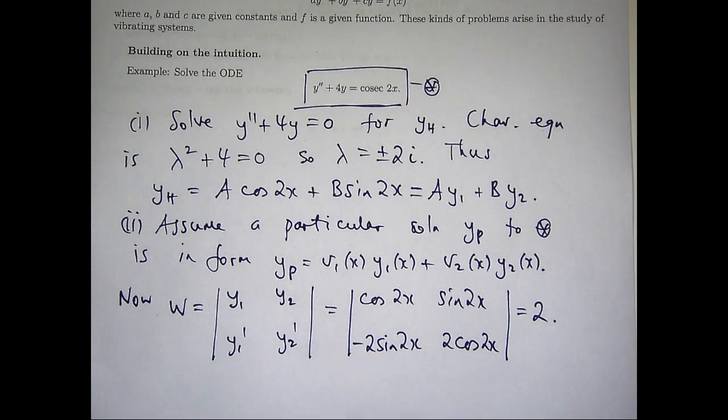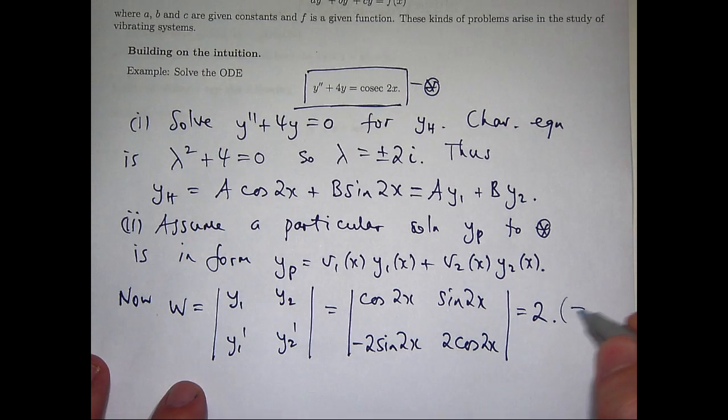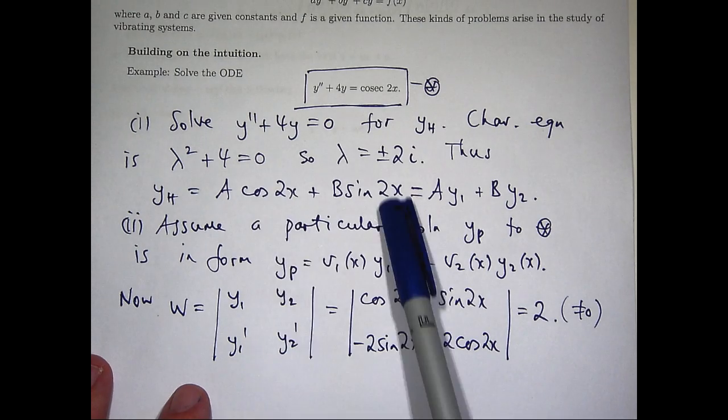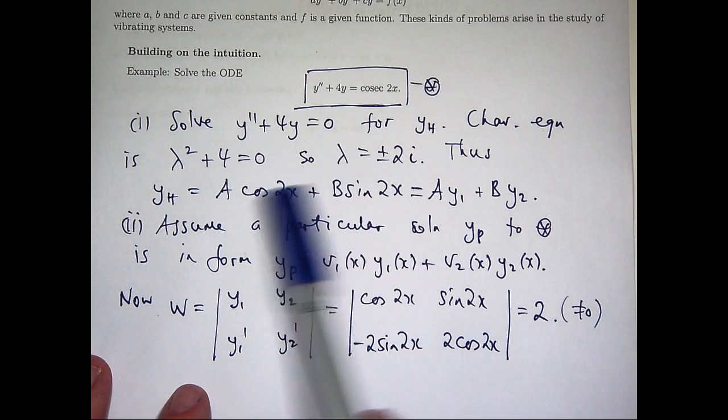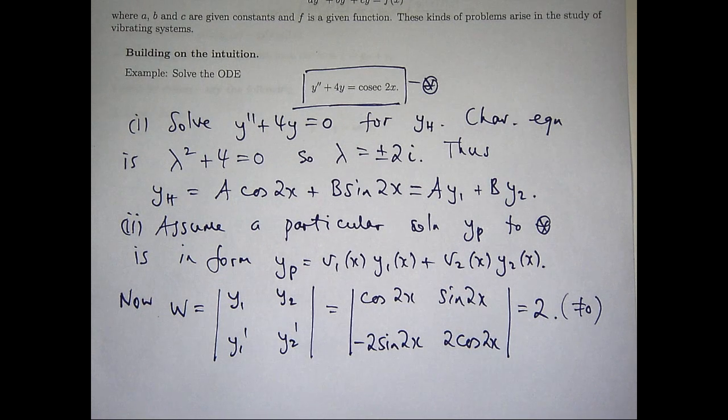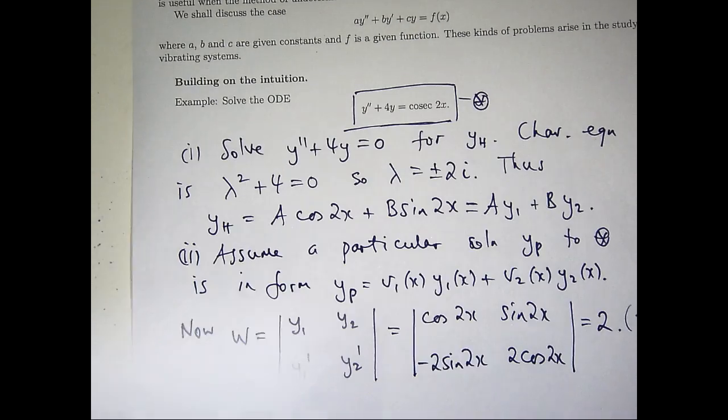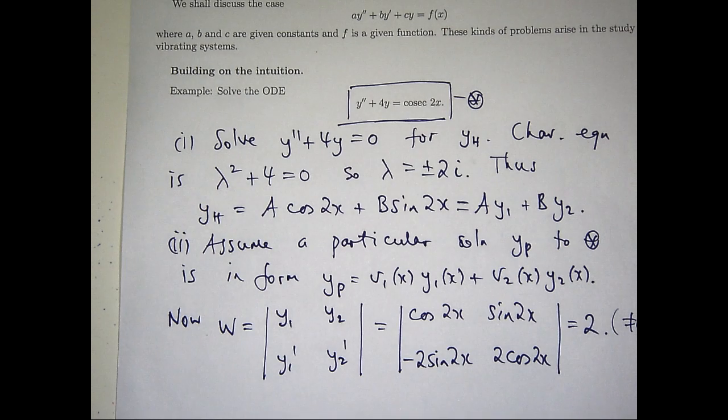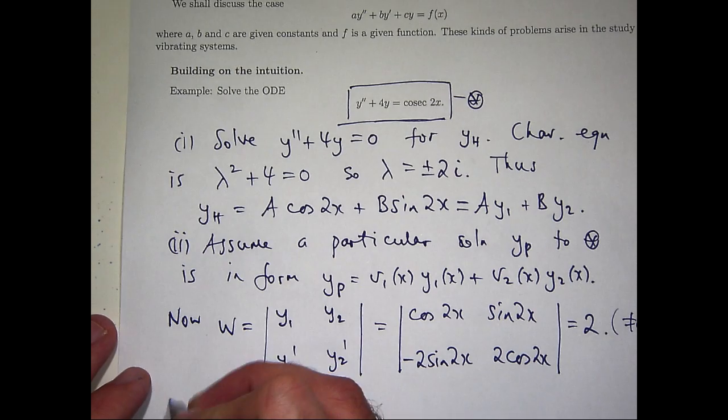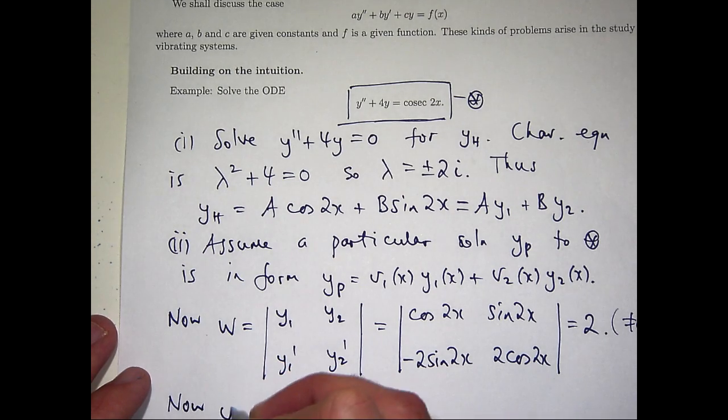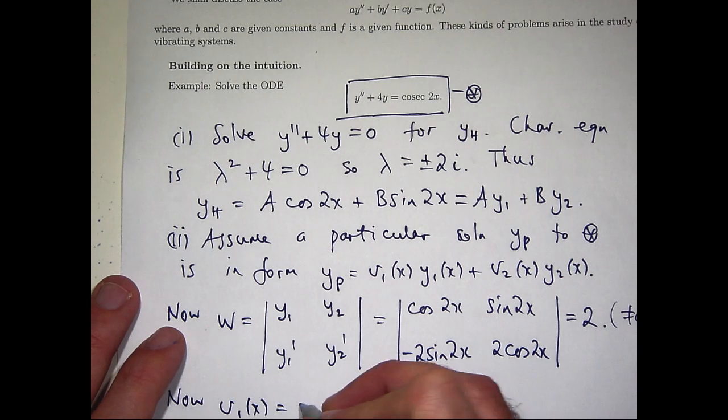Now sometimes your Wronskian is a function of x. In this case, it's just a constant. Having that Wronskian as non-zero tells me that these two functions up here are linearly independent, and so they're suitable for the method of variation of parameters. So what we're going to do is try to apply this formula. I'm just going to calculate these coefficient functions v1 and v2 just separately, and then we'll put everything together.